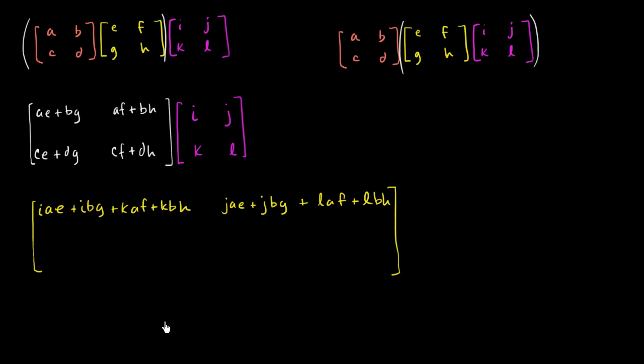So these matrices are bigger than I expected they would be. And then you're going to have over here, you're going to have this times this plus this times this. So ICE plus IDG plus KCF plus KDH. And then finally this times this plus this plus this, or this times that plus this times that. So JCE plus JDG plus LCF plus LDH. All right.